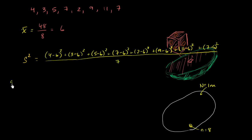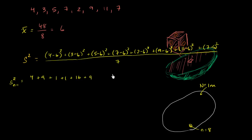Let me work this out. Four minus six is negative two, squared is four. Three minus six is negative three, squared is nine. Five minus six squared is one. Seven minus six squared is one. Two minus six is negative four, squared is sixteen. Nine minus six squared is nine. Eleven minus six squared is twenty-five. And seven minus six squared is one. All divided by seven.